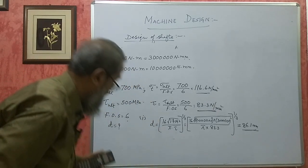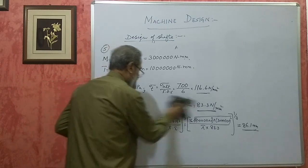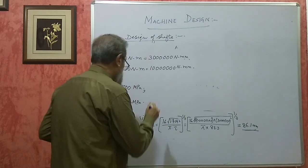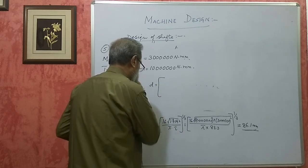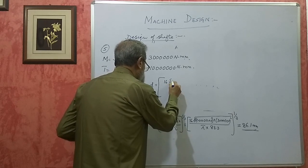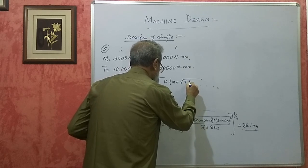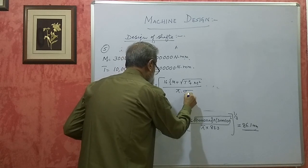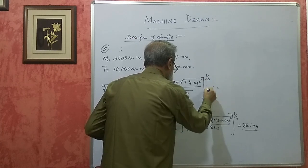Now on maximum normal stress theory, the formula is D = (16 × (M + √(T² + M²)) / (π × tensile stress))^(1/3). Substituting the same values for T and M.